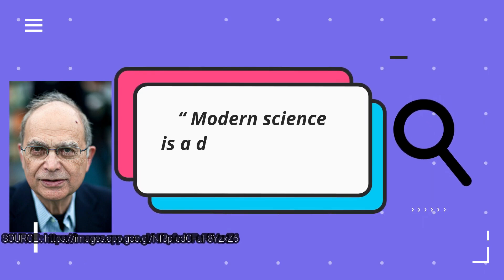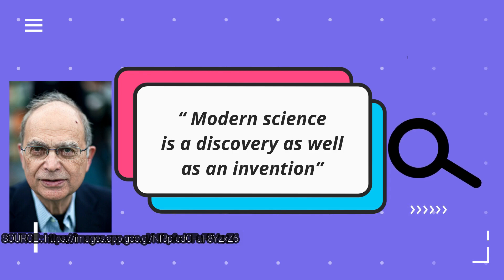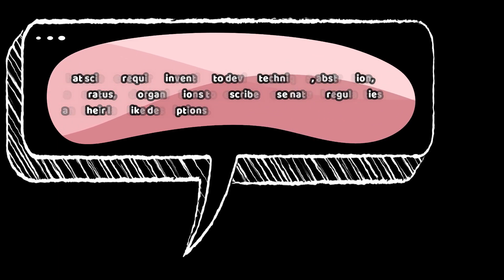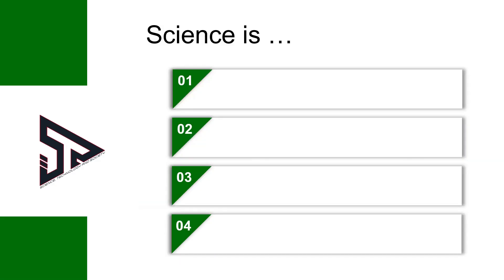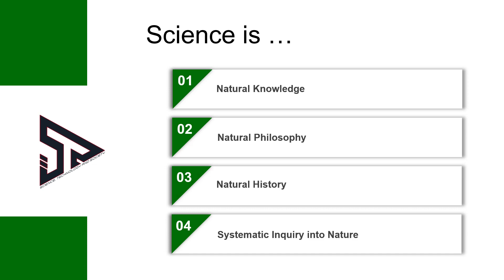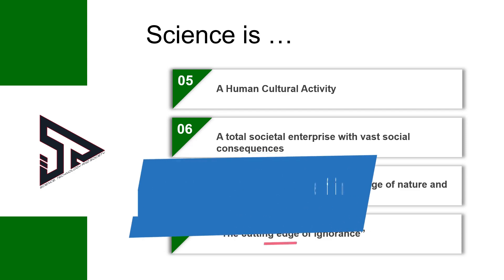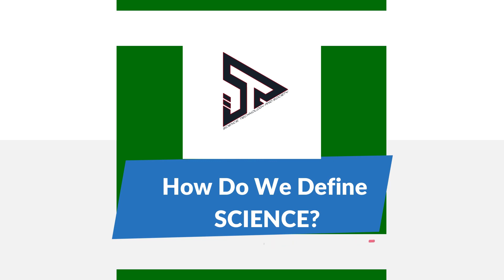Modern science is a discovery as well as an invention. Heilbronn explained that science required invention to devise techniques, abstraction, apparatus, and organizations to describe natural irregularities and their law-like descriptions. Science has been called natural knowledge, natural philosophy, natural history, a human cultural activity, and a total societal enterprise with vast social consequences.